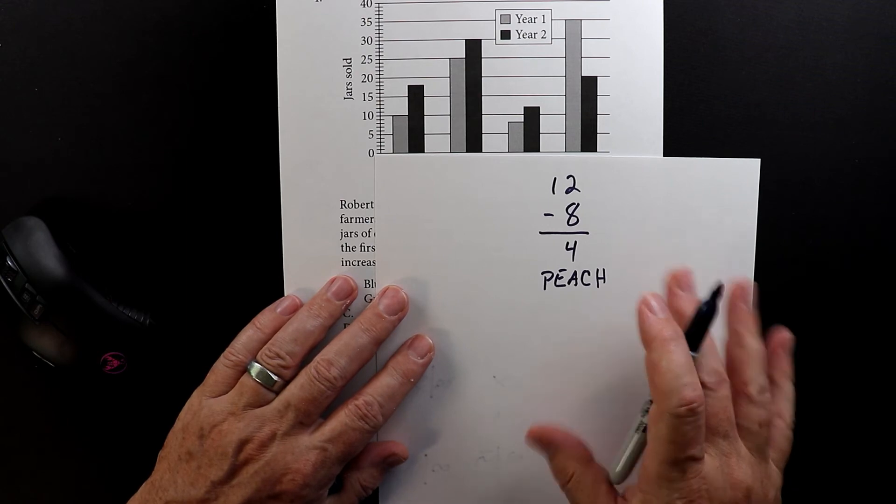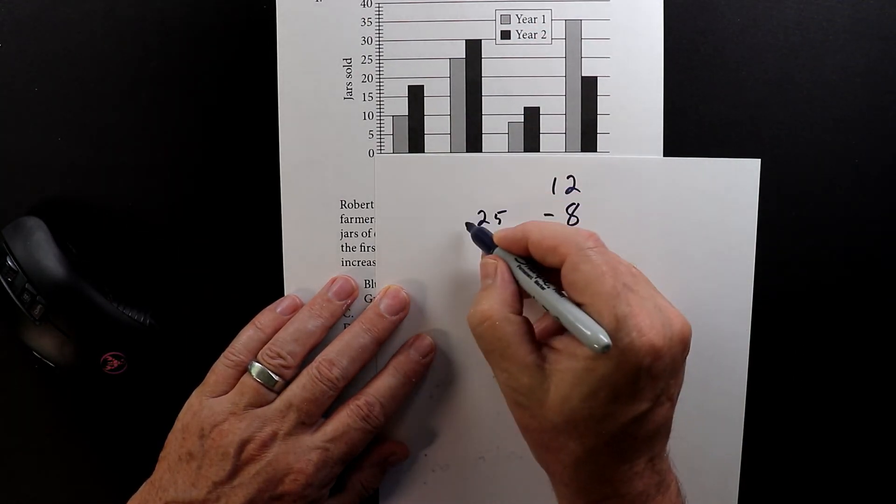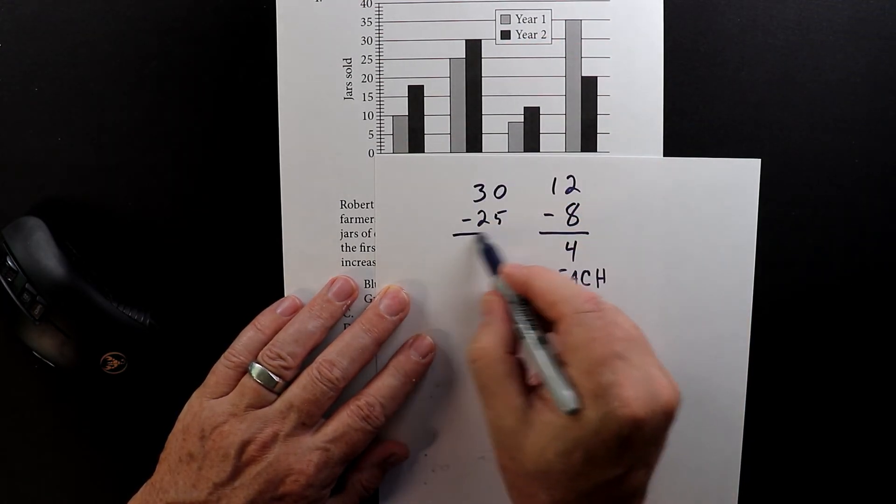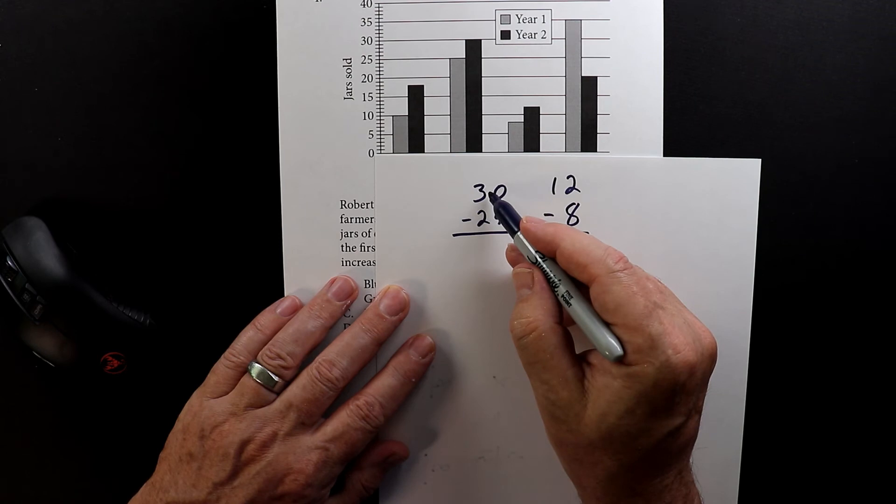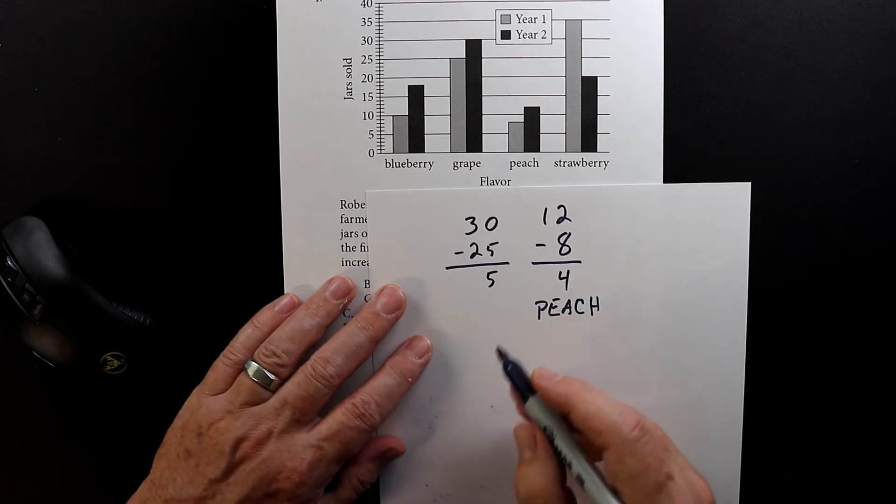Then for grape we had 25 the first year and then the second year Robert sold 30. So 30 minus 25 is 5. So this is grape.